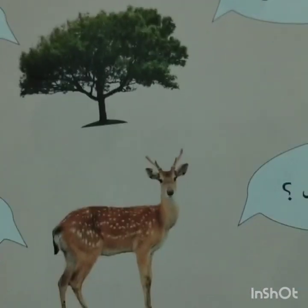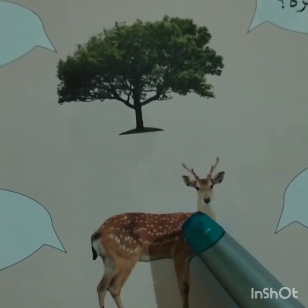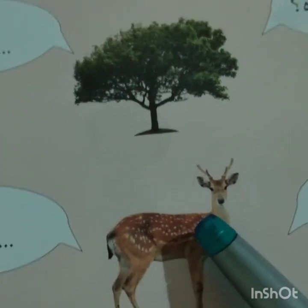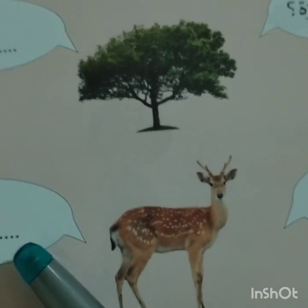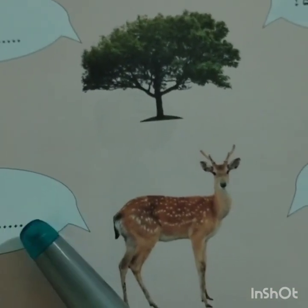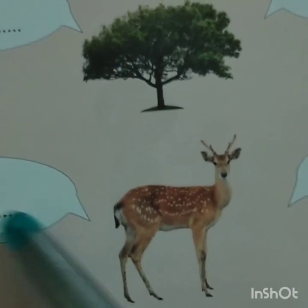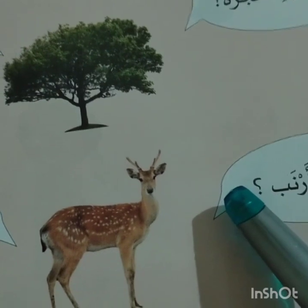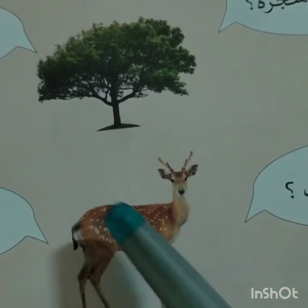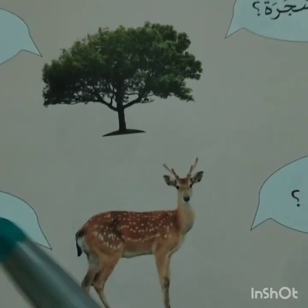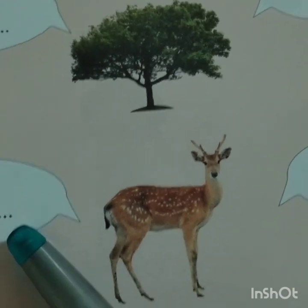Next here. HAL HAZA ARNAB? Is this an arnab? Is this a rabbit? Is this a rabbit? Laa, haza lobiyon. Haza lobiyon. This is a deer. This is a deer. HAL HAZA ARNAB? Is this a rabbit? No, this is a deer. Laa, haza lobiyon.